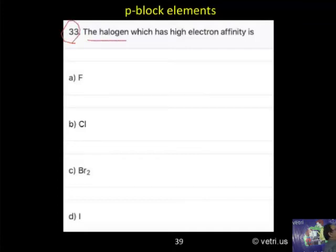Question 33: The halogen which has high electron affinity. Very easy. Fluorine, chlorine, bromine, iodine.